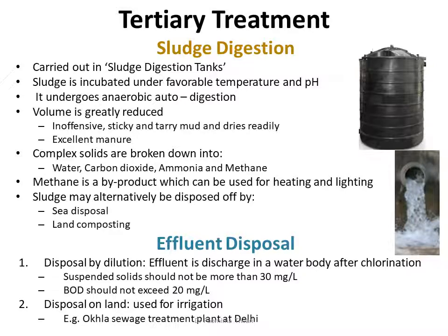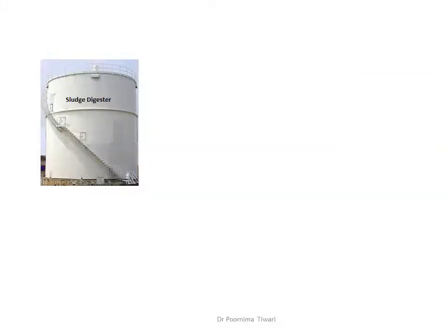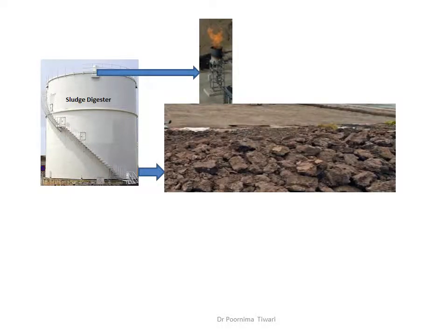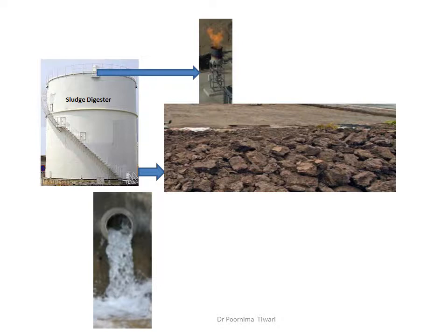A pictorial representation shows the sludge digester as an enclosed tank with no air entry, enabling anaerobic oxidation. Methane rises above and can be used as fuel, and the reduced-volume sludge can be dried in sludge drying beds and used as fertilizer. The effluent from secondary sedimentation can be disposed of by dilution into a water body after chlorination — provided suspended solids do not exceed 30 mg per litre and BOD does not exceed 20 mg per litre — or used for irrigation, as is done at the Okhla treatment plant in New Delhi.